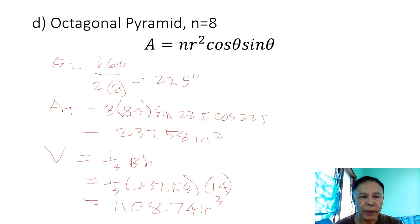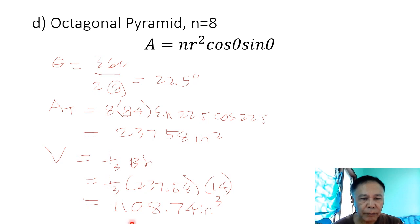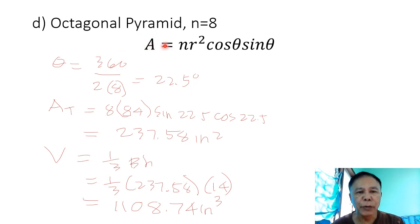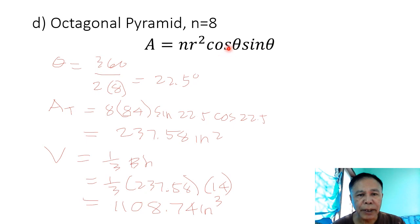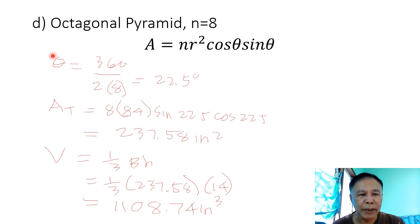To summarize, the formula derived is n times R squared times cosine theta times sine theta for the total area at the base of the pyramid, where R is solved using the diagram and Pythagorean theorem, and theta equals 360 degrees divided by the number of sides, divided by 2 — because the derivation takes one half of the triangle, then multiplies by 2.